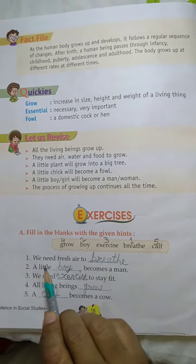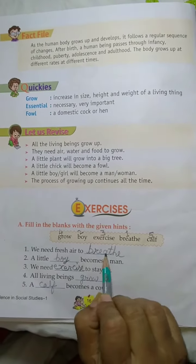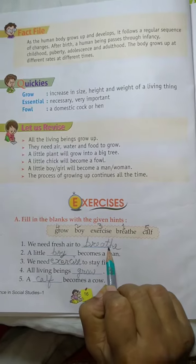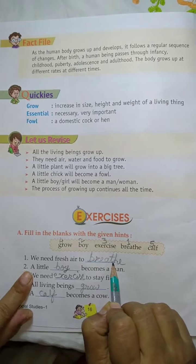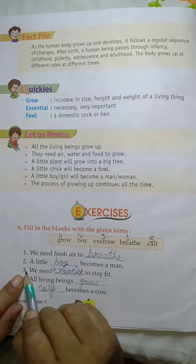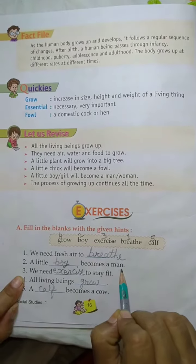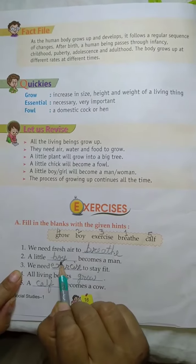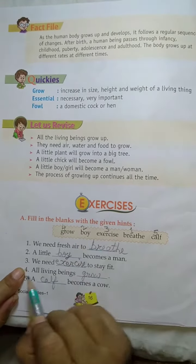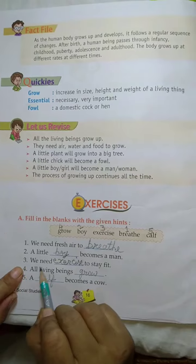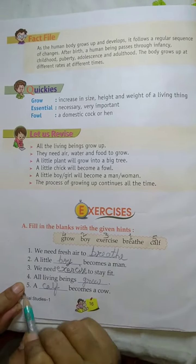In number 1, we need fresh air to breathe. You will write in these blanks. Number 2, a little boy becomes a man. Number 3, we need exercise to stay fit.